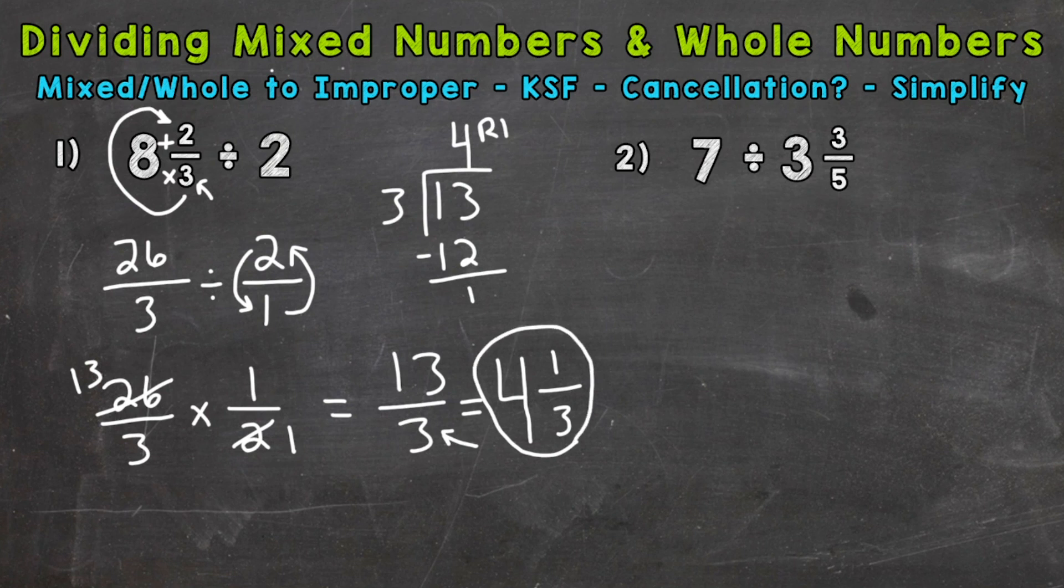I do want to compare our answers if we did not use cancellation to see how that would work out. So let me rewrite. We had 26 over 3 times 1/2 here. So 26 times 1 is 26. 3 times 2 is 6. So we end up with 26 over 6. So looking a little different here. But let's see how it ends up once we simplify. So 26 divided by 6. How many whole groups of 6 out of 26? 4. That gets us to 24, right?